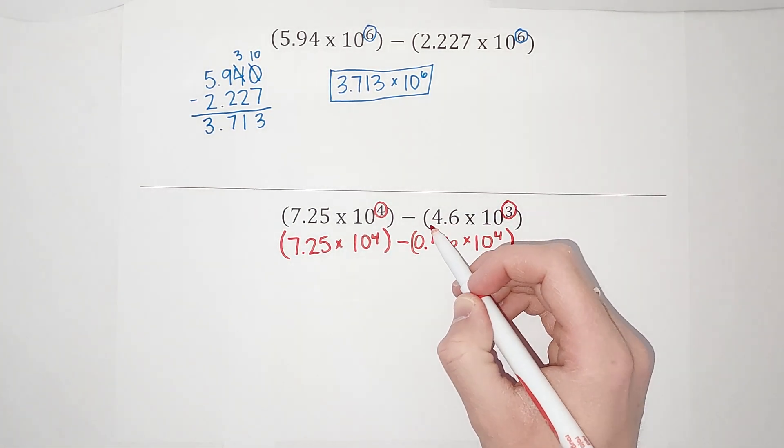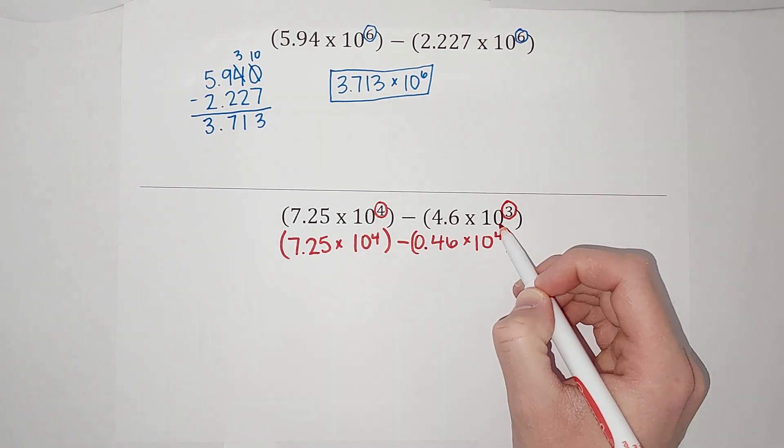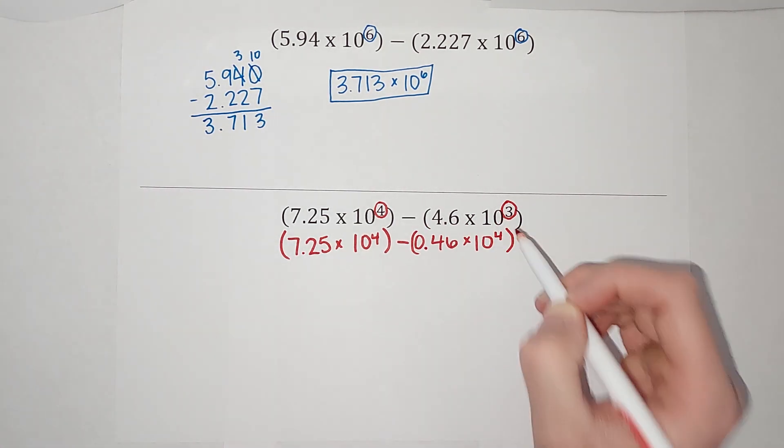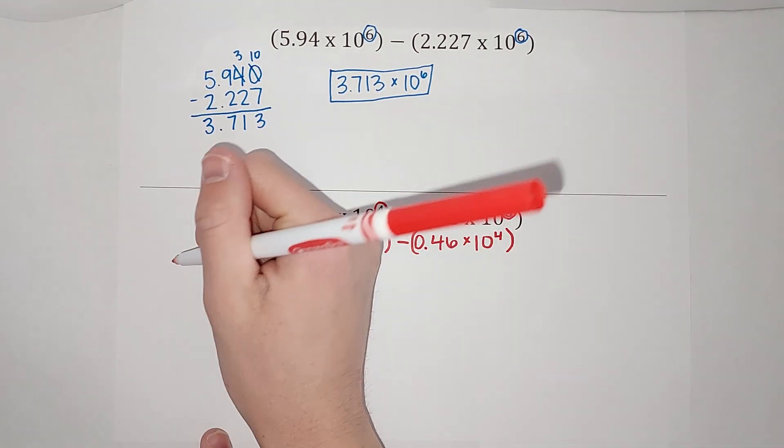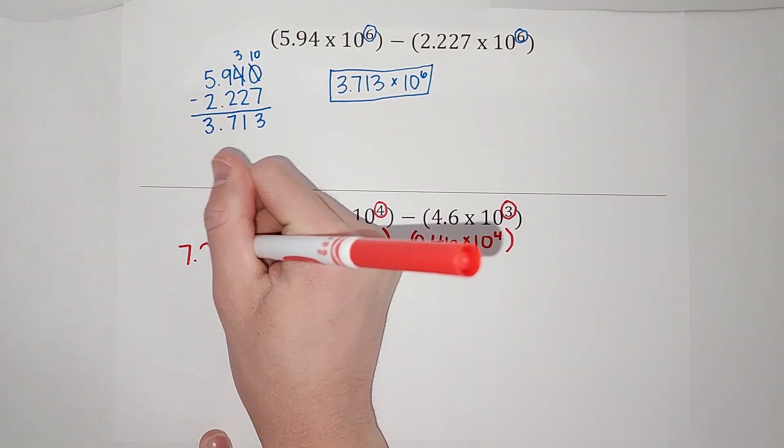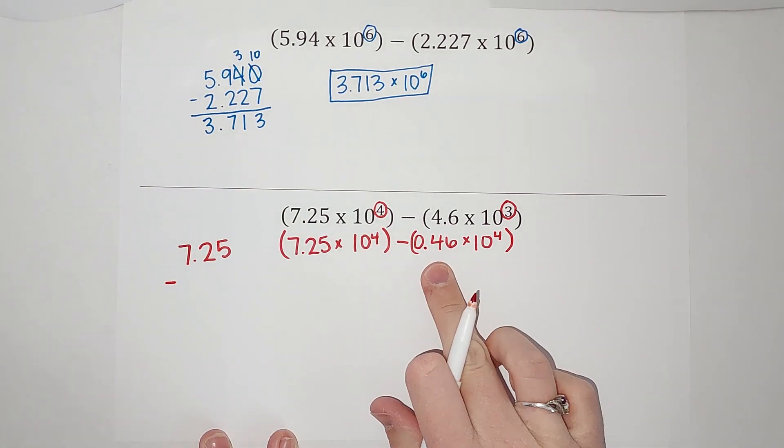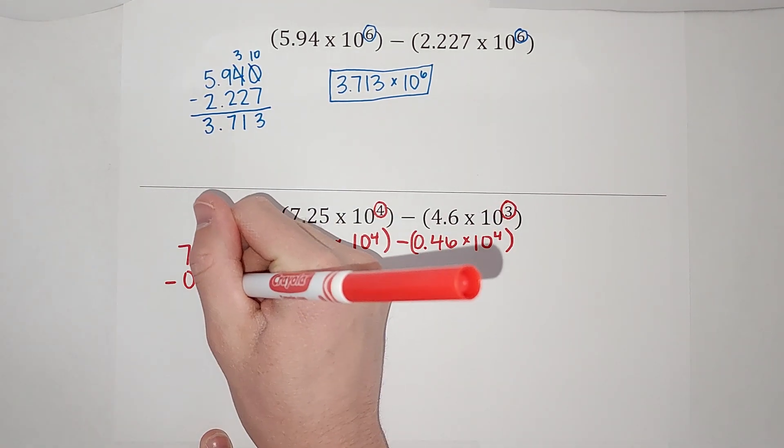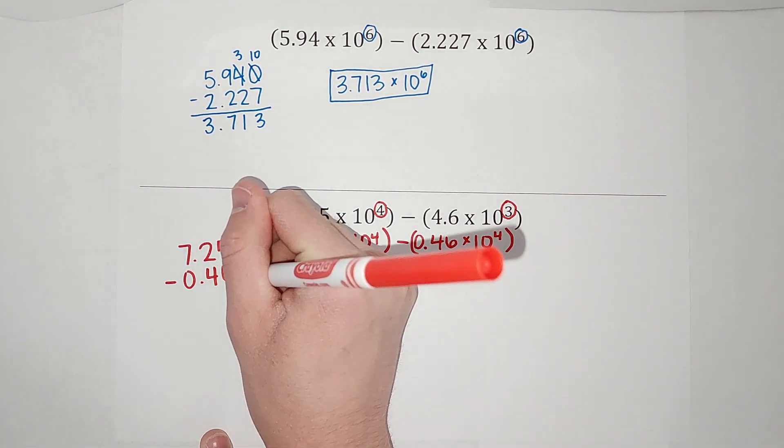Because we moved that over once, to get it back to that spot, if it's here, I need to move it one extra time. So it'd be 10 to the fourth. So now they're both in 10 to the fourth power, I can go ahead and subtract them.